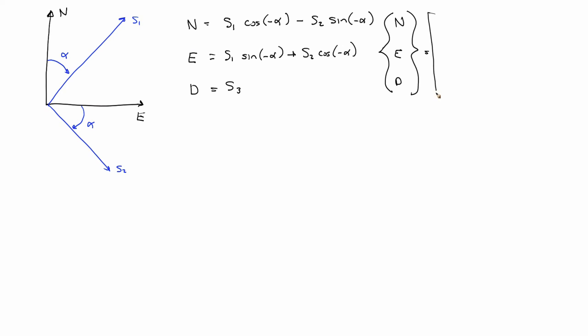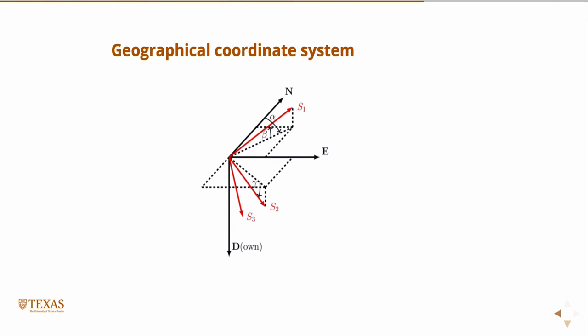Now, I can write this in matrix form. N, E, and D is equal to cosine minus alpha, sine minus alpha... S1, S2, S3. So, this is a matrix, I'm going to call it R1. So, that's one rotation.